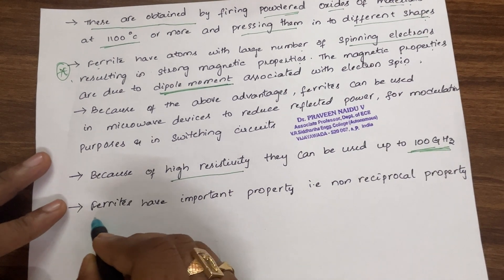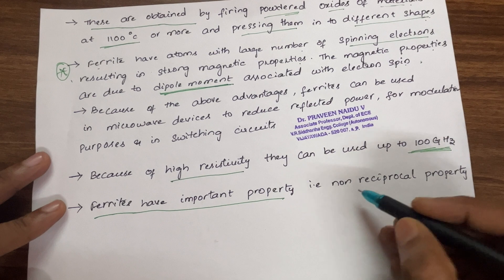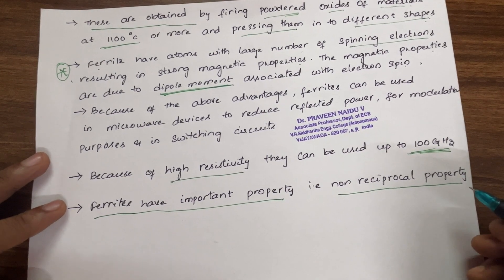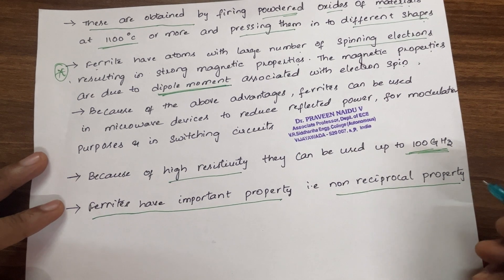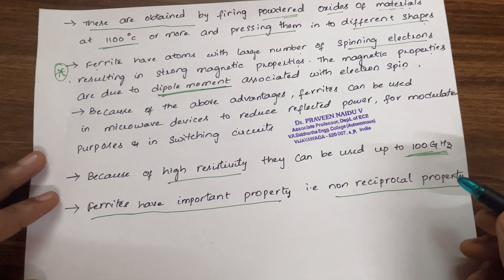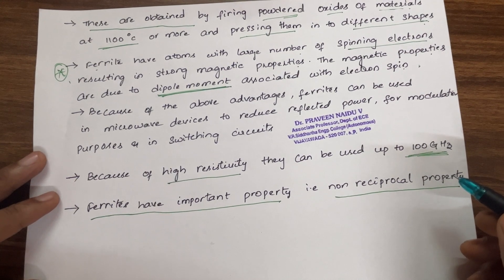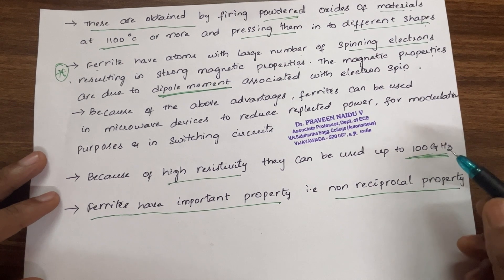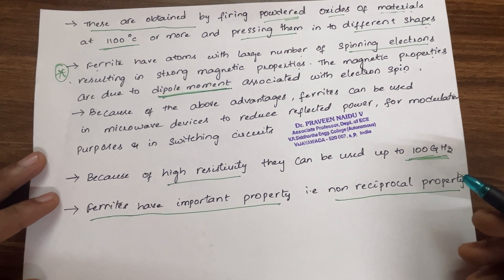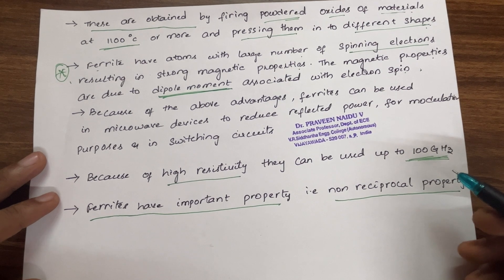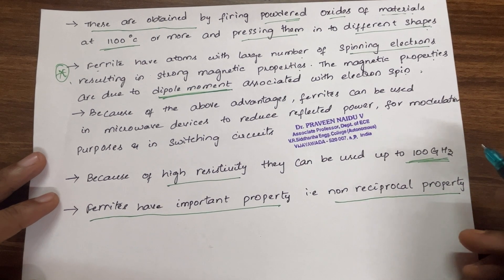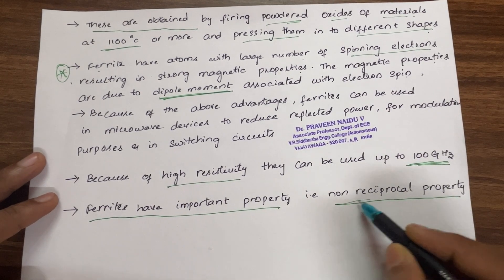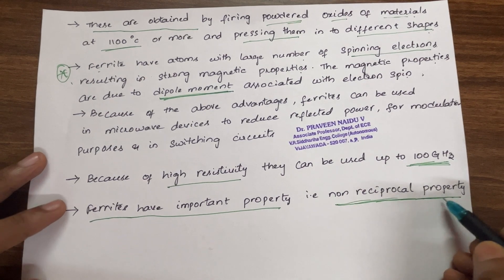The most important property of ferrites is the non-reciprocal property. In previous videos we discussed E-plane T, H-plane T, magic T, directional couplers, and the properties of the S-matrix — including conditions for symmetry and reciprocity. When dealing with ferrites, we must remember that they exhibit a non-reciprocal property.